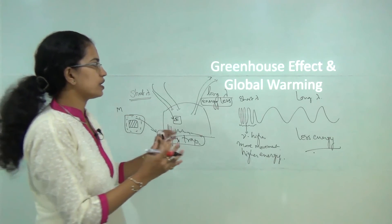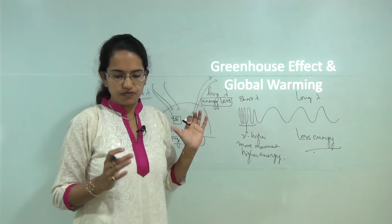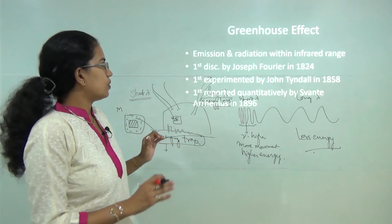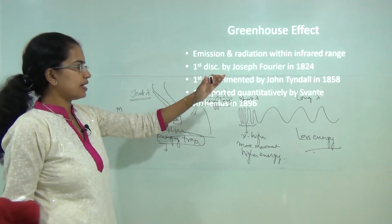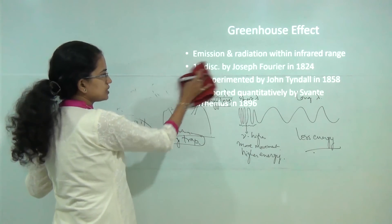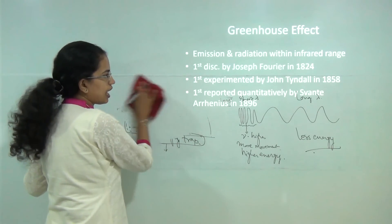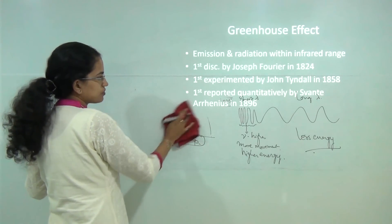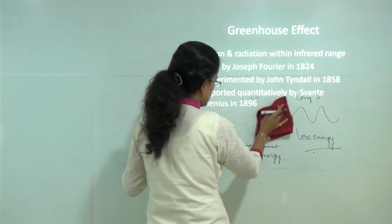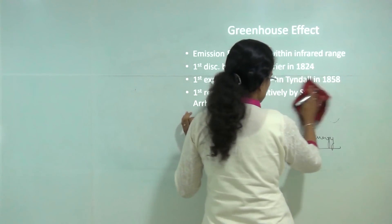This concept of greenhouse effect was first discovered by Joseph Fourier, first experimented by John Tyndall, and finally it was quantitatively measured by Arrhenius. These are some important facts and figures you must know about greenhouse effect.